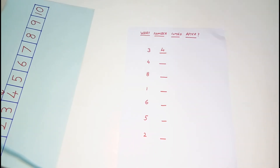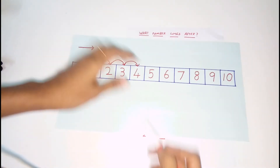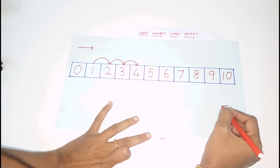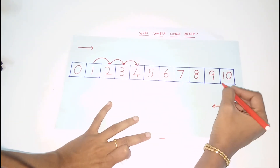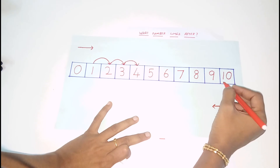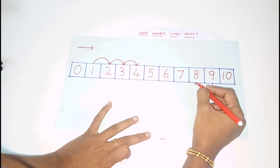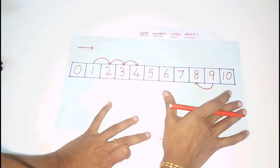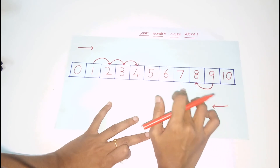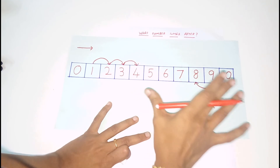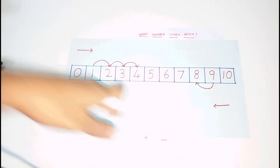For the before concept, you will follow the same procedure. Before the number, you will mark in the right direction. What number comes before 9? You will mark in the right direction, use the number strip, and try to get the answer. For example, you will answer using the number strip, and at the next level, you can do it without it.